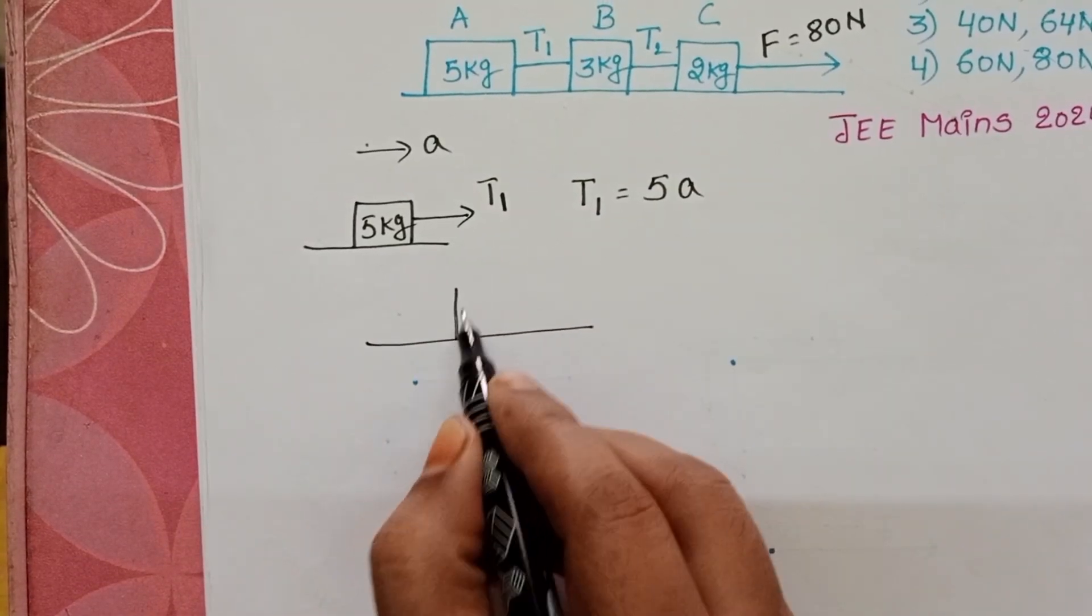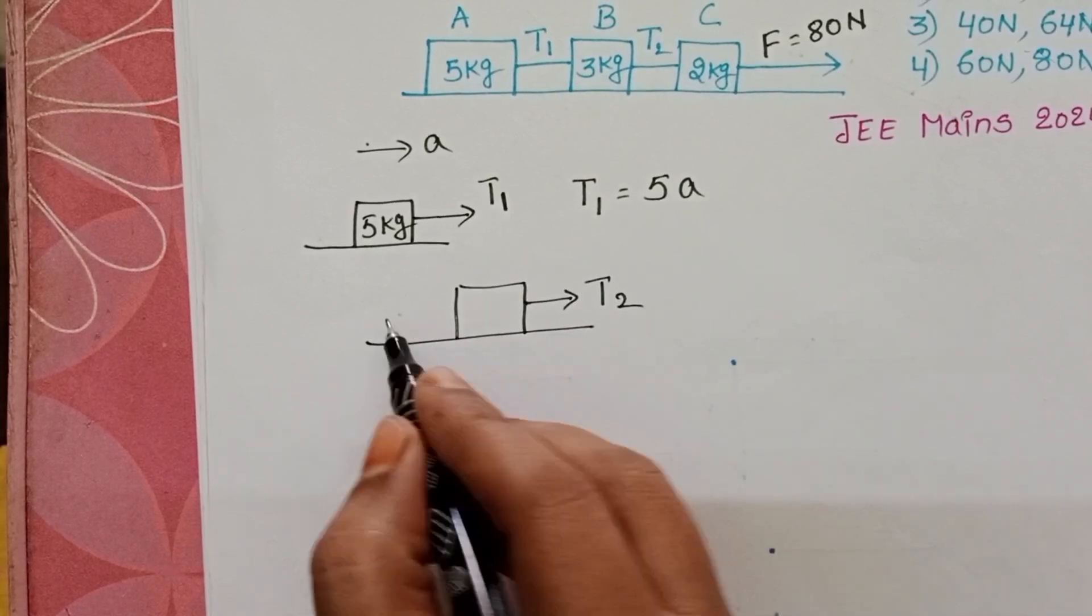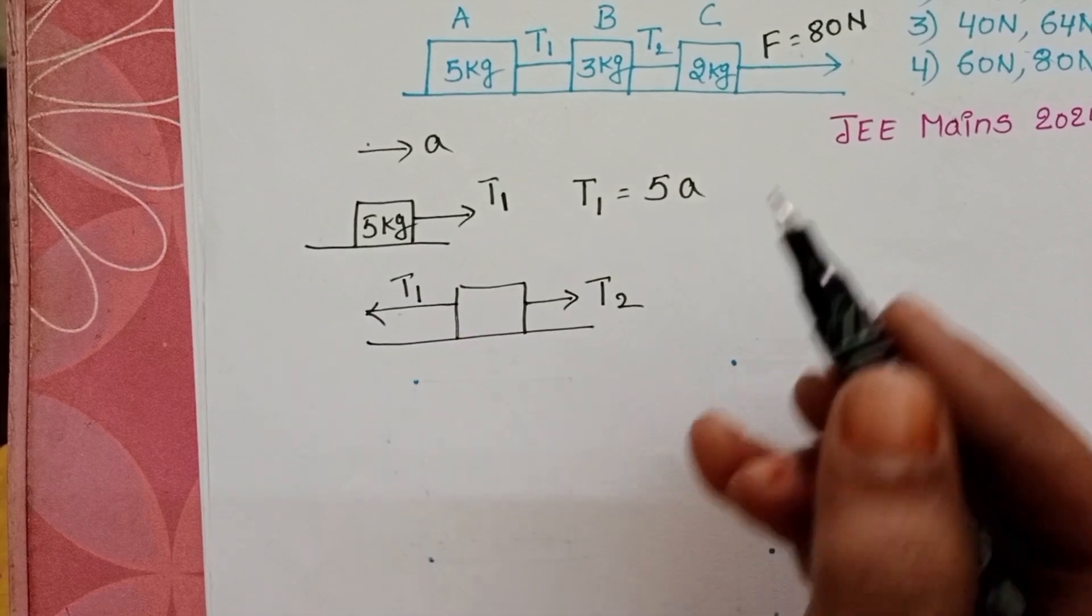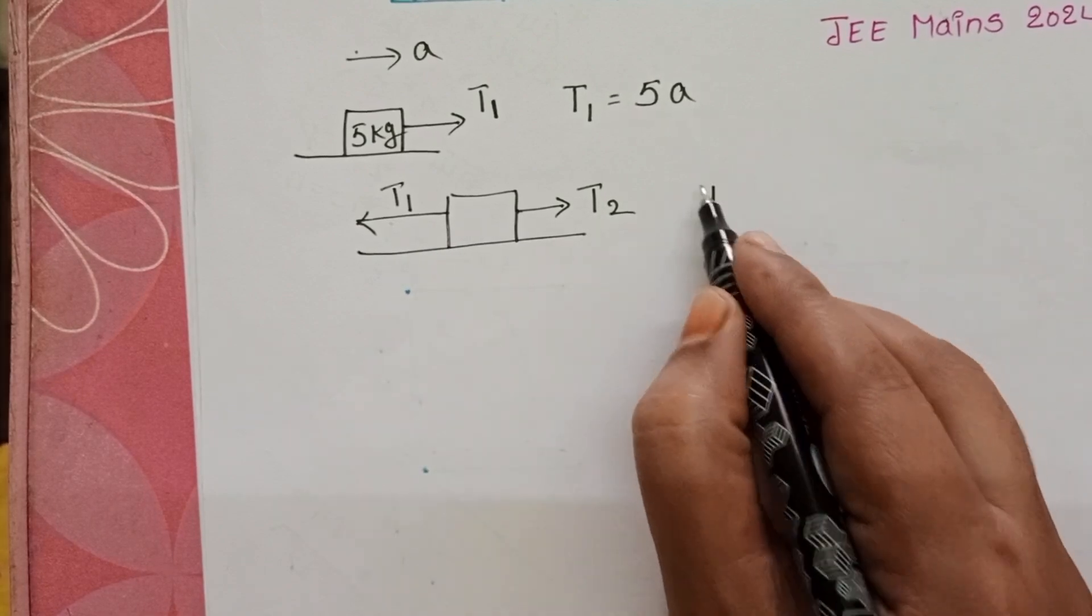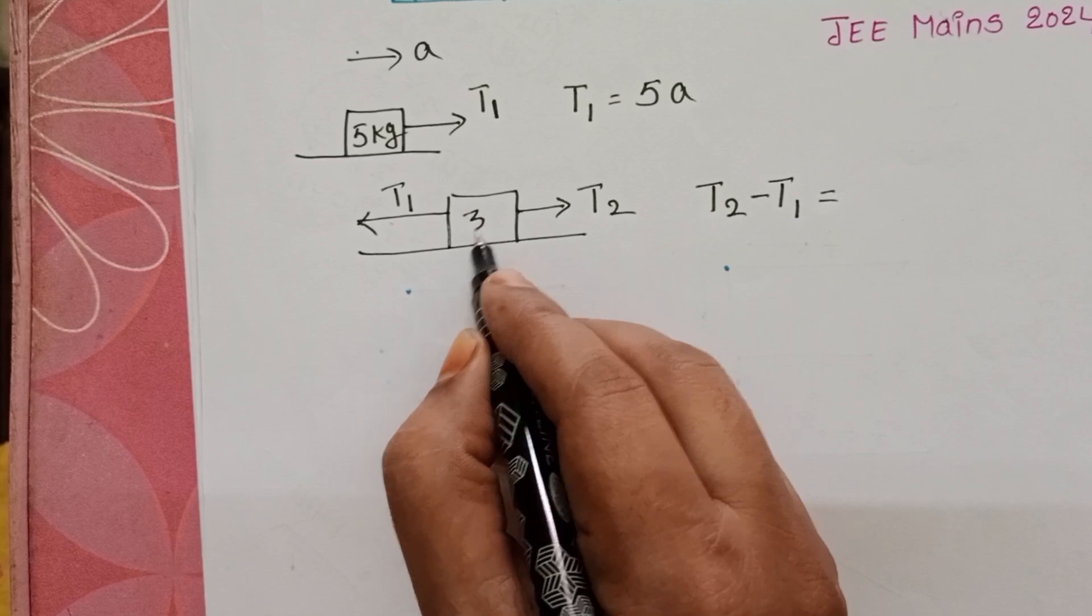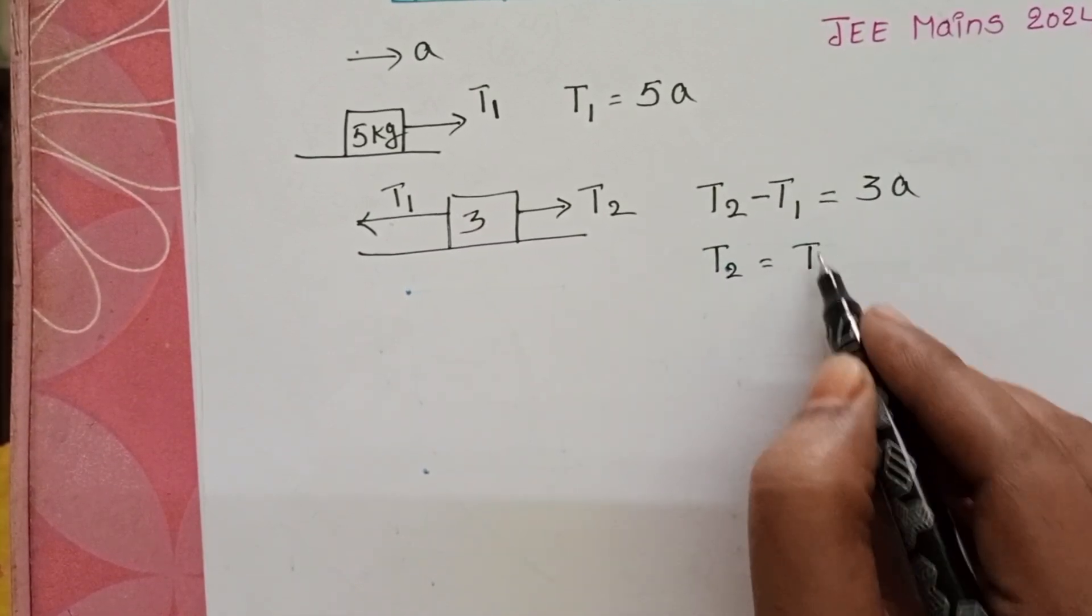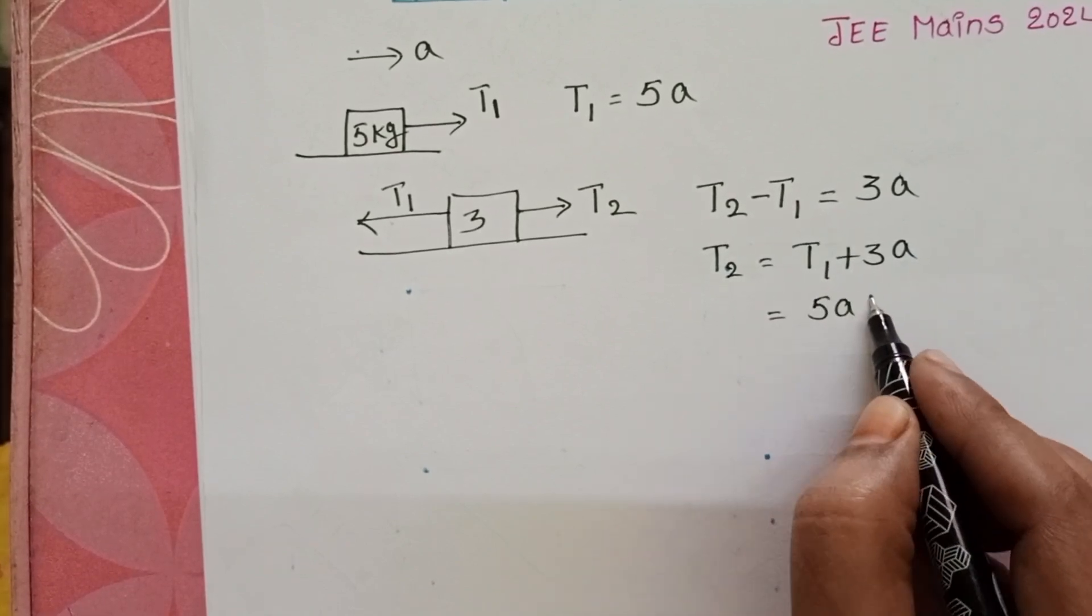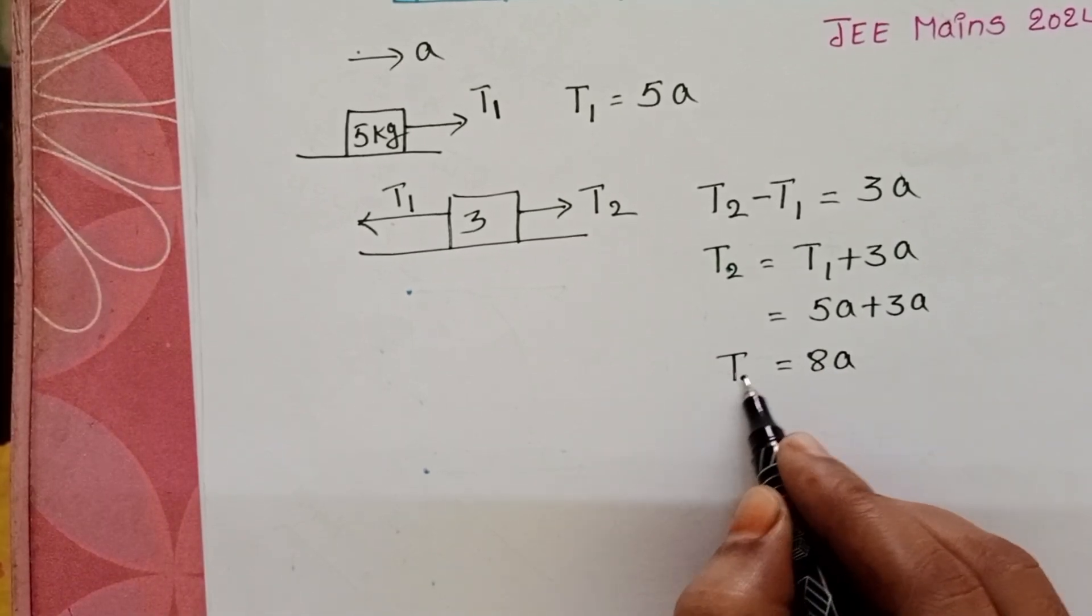Now take the 3 kg block. This side, tensional force is T2, and in opposite direction tensional force is T1. We know action and reaction forces, so here T2 is greater than T1. T2 minus T1 equals mass of the block into acceleration. T2 equals T1 plus 3A. Here T1 equals 5A, so 5A plus 3A equals 8A. This is T2.